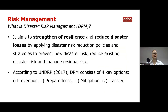What is disaster risk management? It aims to strengthen resilience and reduce disaster losses by applying disaster risk reduction policies and strategies to prevent new disaster risk, reduce existing disaster risk, and manage residual risk. According to the United Nations Office on Disaster Risk Reduction, DRM consists of four key options: prevention, preparedness, mitigation, and transfer.